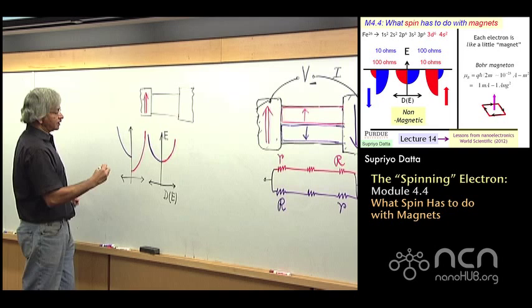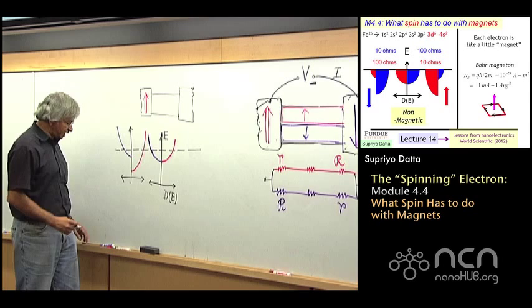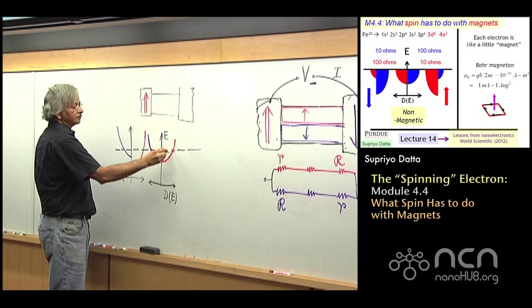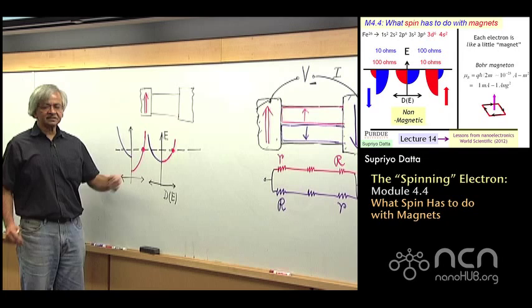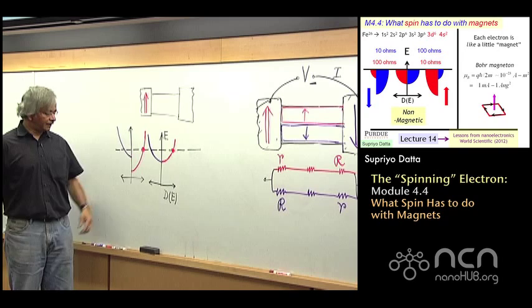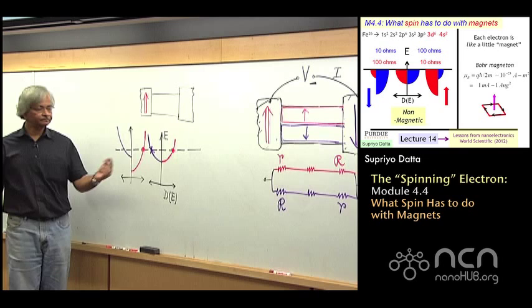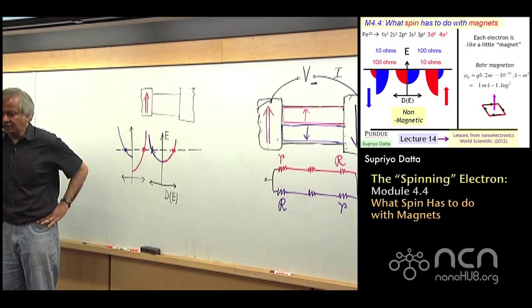If I draw the electrochemical potential somewhere here, what it means is when it comes to the red channel, let's say I've got a red electron here trying to get out into this contact, what it sees is lots of states to get out into. Because there are lots of states to get out, the corresponding resistance is lower. It gets out easily, current flows much more easily.